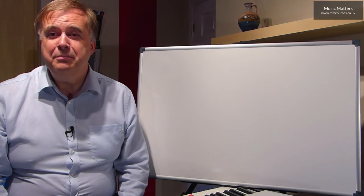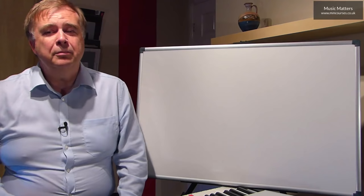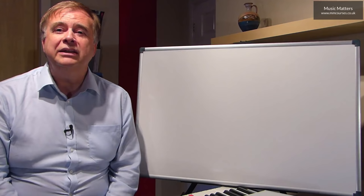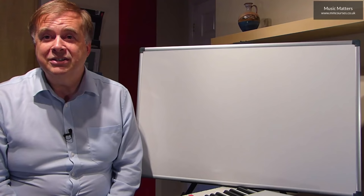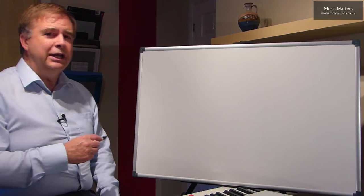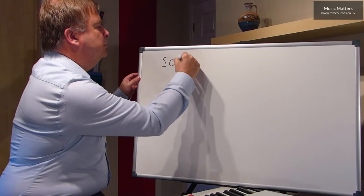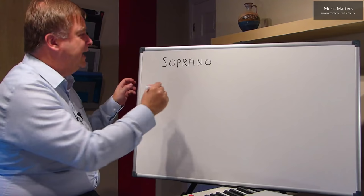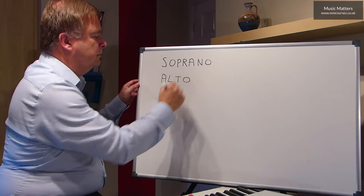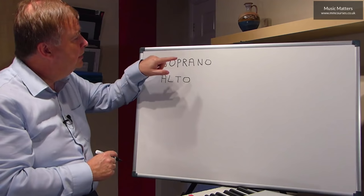I'm going to start by not talking about instruments of the orchestra, but by talking about voices — voices that you might meet in a choir — and then you'll see how this relates to what we're going to say about instruments of the orchestra. Now if you sing in a choir, the highest voice is called the soprano. And the next voice down from the top is called the alto. These are often the ladies in the choir. If you have boys singing a soprano line, they're sometimes called trebles.